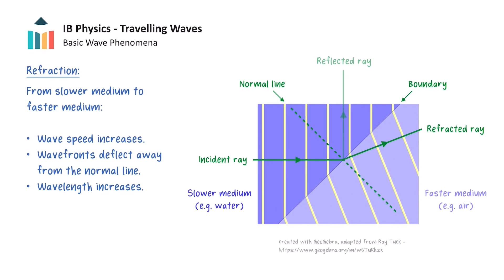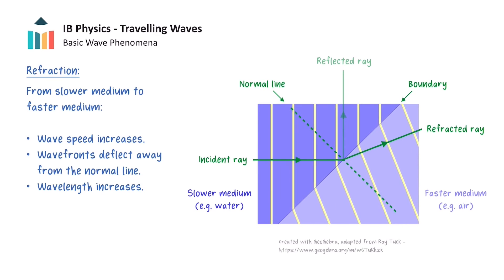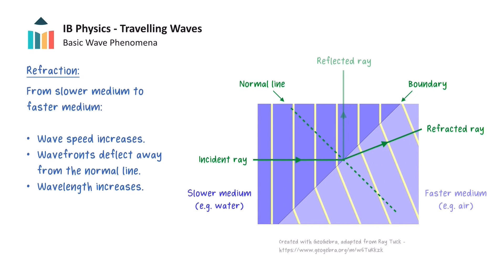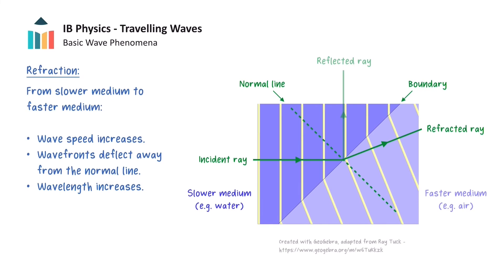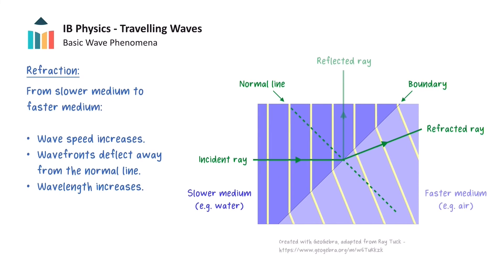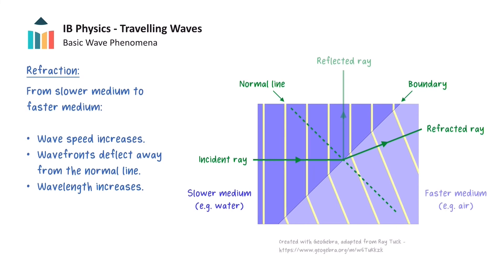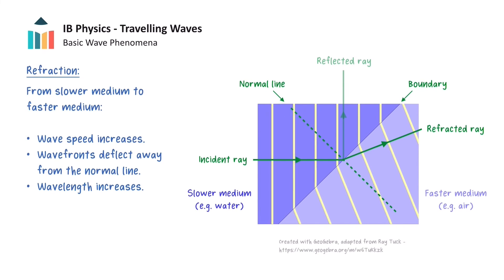No refraction occurs when waves are incident along the normal line of the boundary, as they will continue along the normal line of the boundary undeflected. Refraction is fundamental to the use of lenses and is responsible for the formation of rainbows amongst other uses. Refraction will be covered in greater detail in another video.